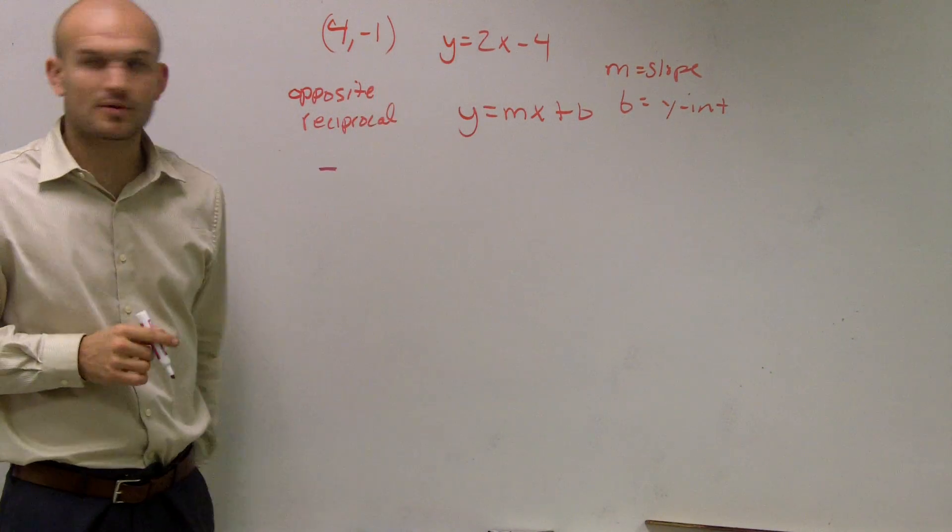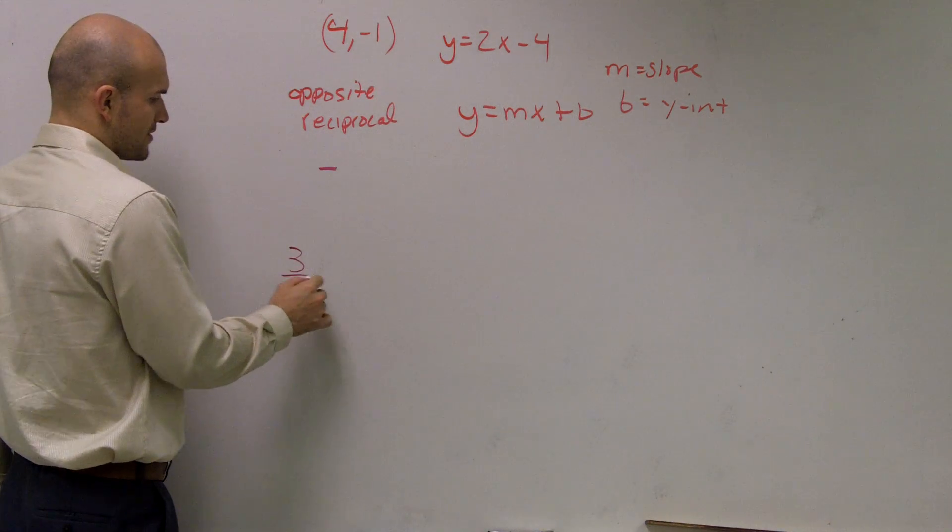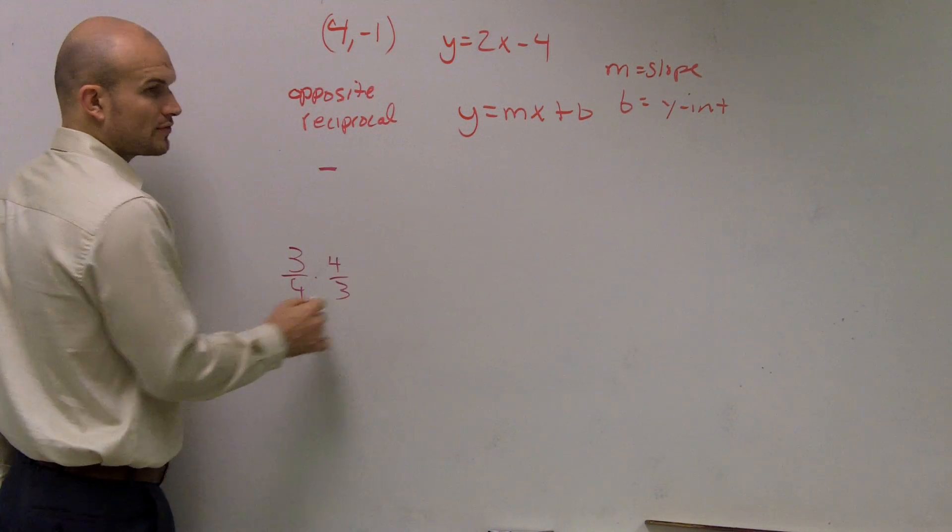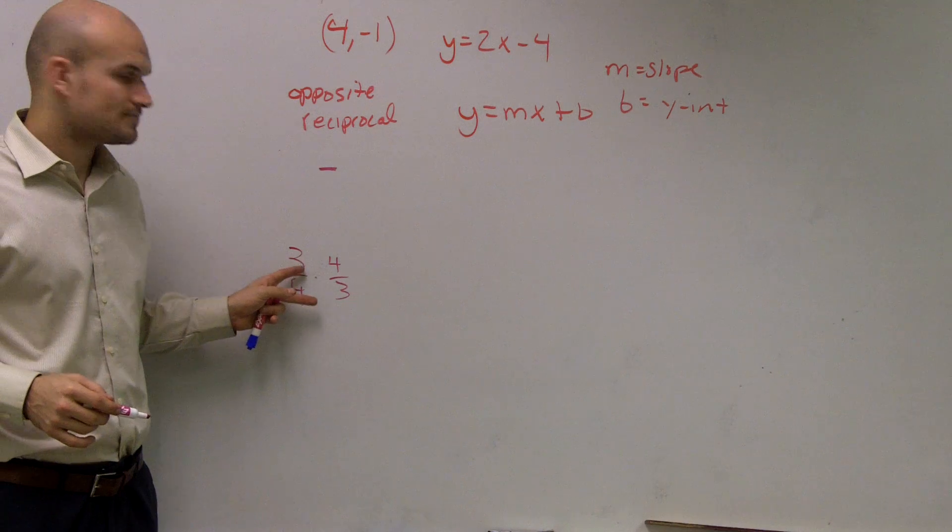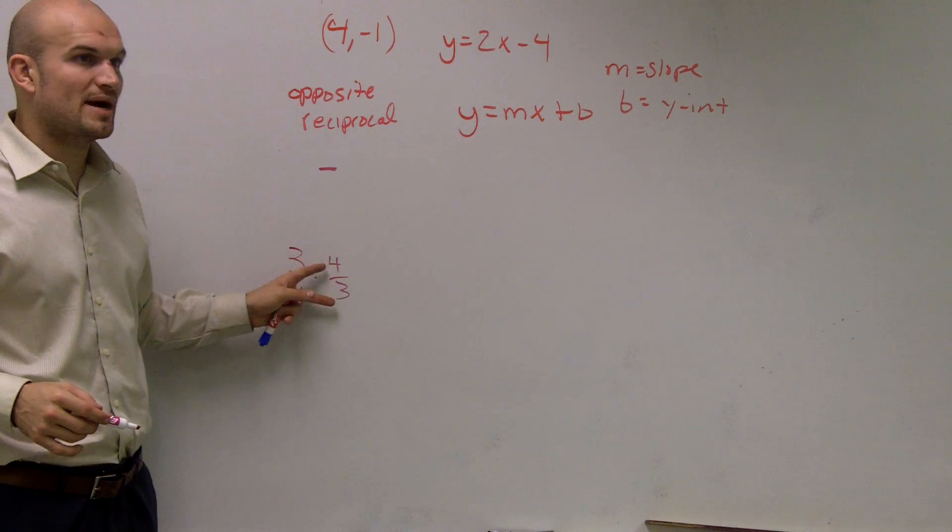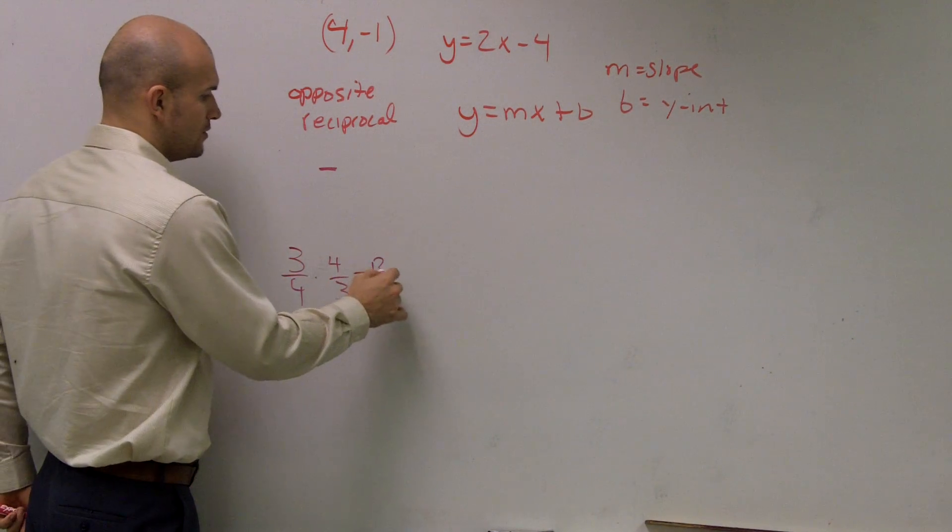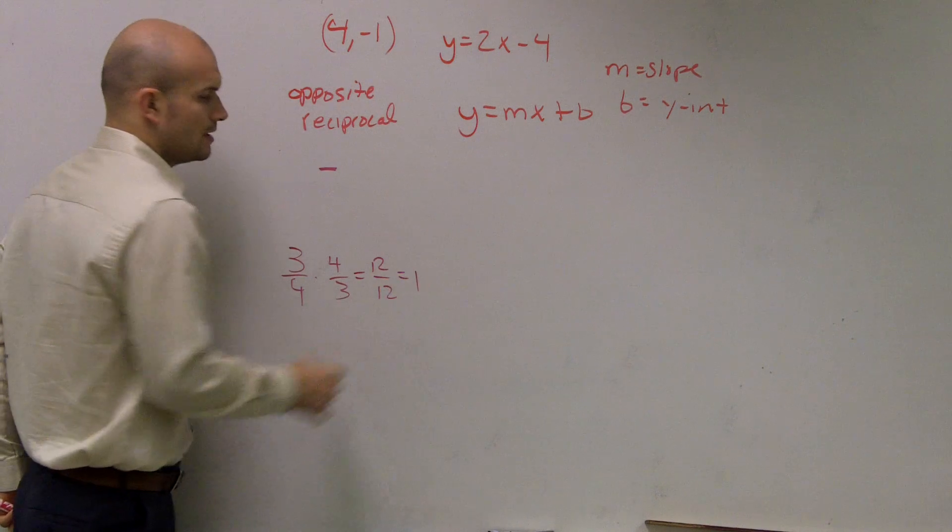Then I look at the reciprocal. Remember, the reciprocal of 3/4 is 4/3. Whatever number, when you multiply by its reciprocal, is going to always equal 1.